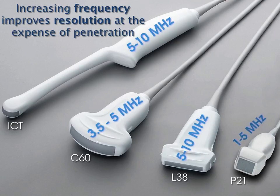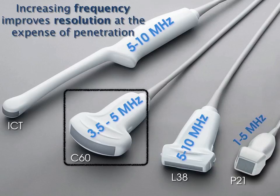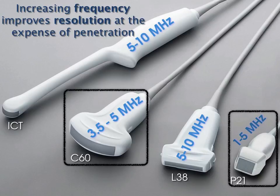For imaging the bladder, keep in mind that increasing frequency gives better resolution at the expense of penetration. The bladder is not right against the skin line — it's deep in the body — so we need a low-frequency probe for adequate penetration. We use either the C60 or the P21. Most machines have the P21, which works well; the C60 looks a bit better with more crystals. You could use other probes in a pinch, but it wouldn't be ideal.